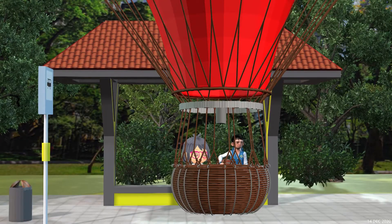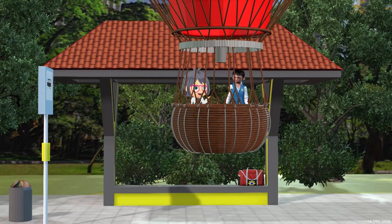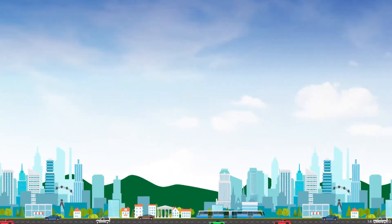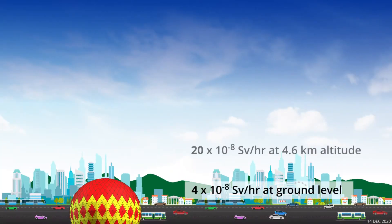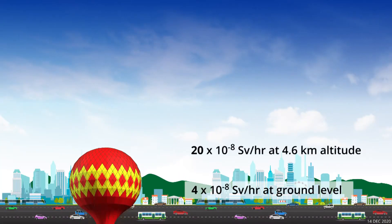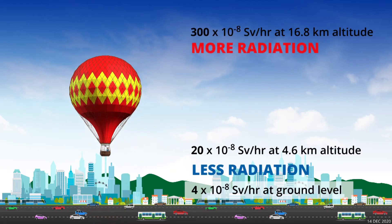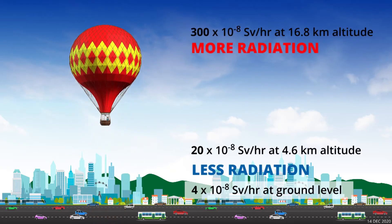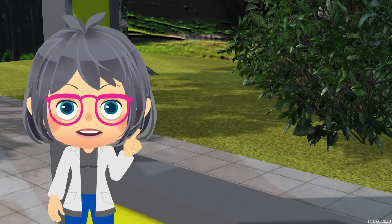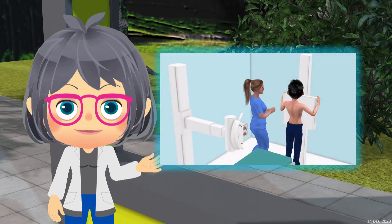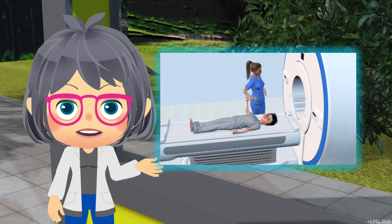Here is a graph of how much ionizing radiation we receive per unit time depending on our altitude. And apart from this, there is ionizing radiation that you can get from man-made sources like x-rays and CT scans.